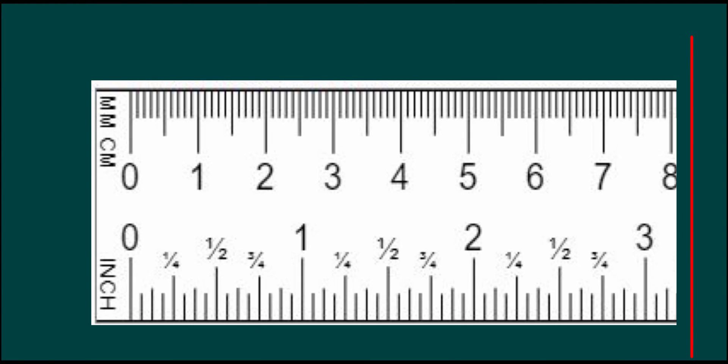So if we look at a ruler, on the top we've got our centimeters and millimeters, and on the bottom we've got our inches. So here is one imperial inch.